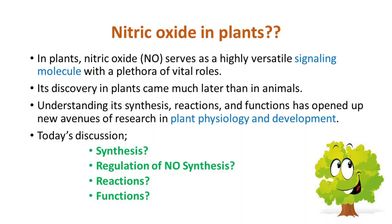What is plant nitric oxide? In plants, nitric oxide serves as a highly versatile signaling molecule with a plethora of vital roles. Its discovery in plants came much later than in animals. Understanding its synthesis, reactions, and functions has opened up new avenues of research in plant physiology and development. Today's discussion covers nitric oxide synthesis, regulation of nitric oxide synthesis, reactions of nitric oxide, and functions of nitric oxide in plants.